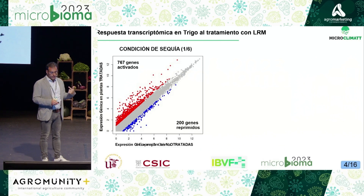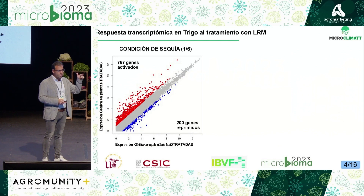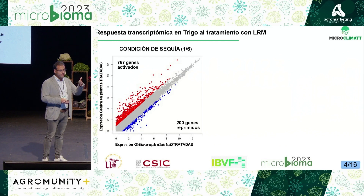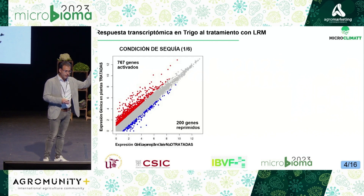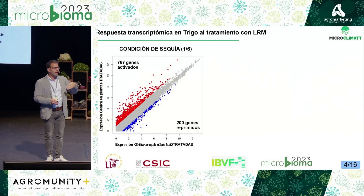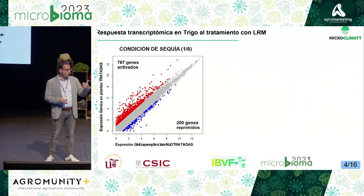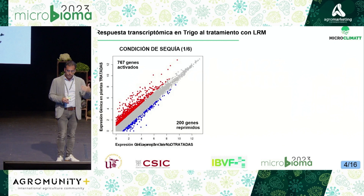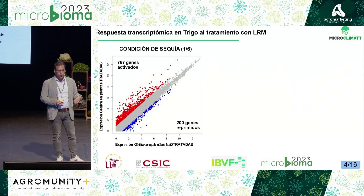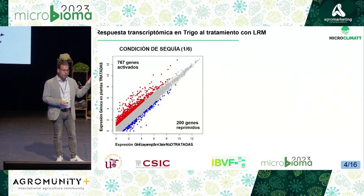Each point here represents a gene, and its position in the square represents whether it is unaffected — appearing on the main diagonal — activated, appearing in red in the upper triangle, or repressed, appearing in the lower triangle. What we observed was that the foliar application of LRM had a substantial and significant effect on gene expression in wheat, activating and repressing nearly a thousand genes.